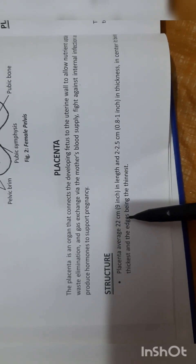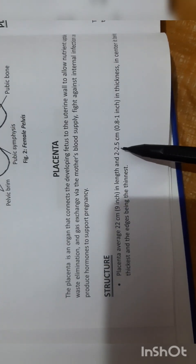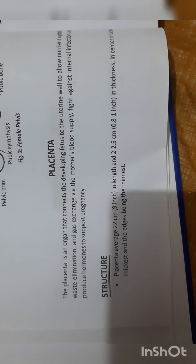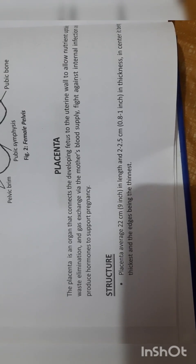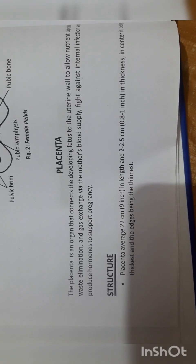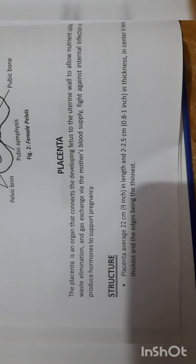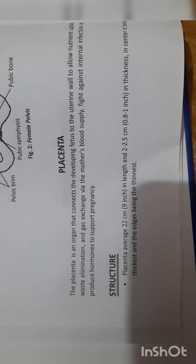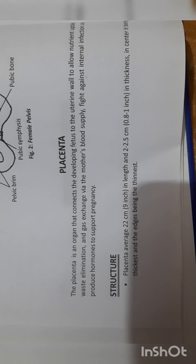The structure of the placenta: average size 22 centimeters, thickness 2 to 2.5 centimeters, being thick at the center and thin at the edge. The placenta weight is about 500 grams. It connects to the fetus through the umbilical cord, which is approximately 55 to 60 centimeters in length. The umbilical cord has two arteries and one umbilical vein.